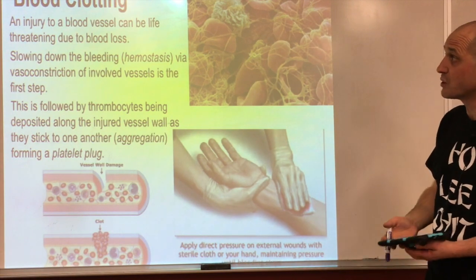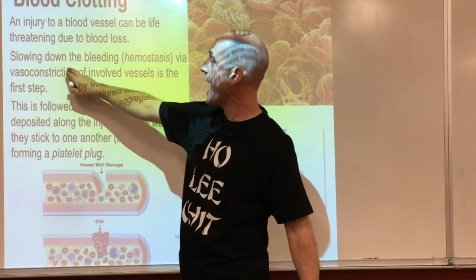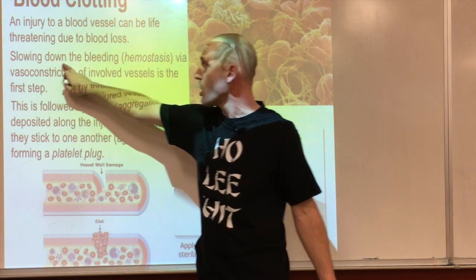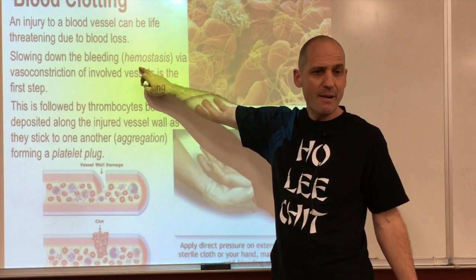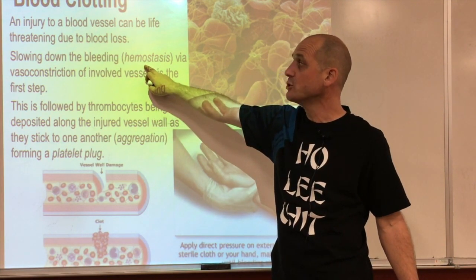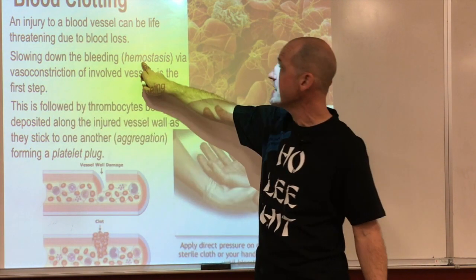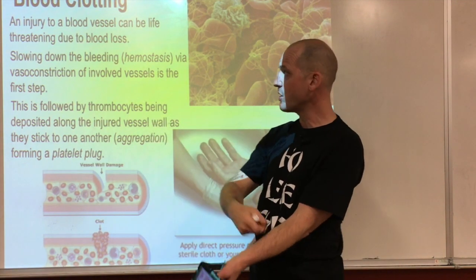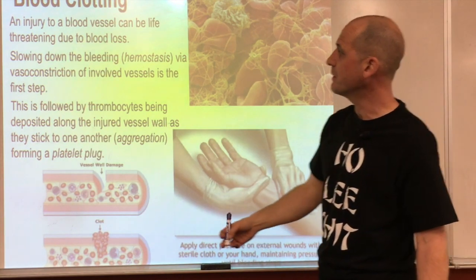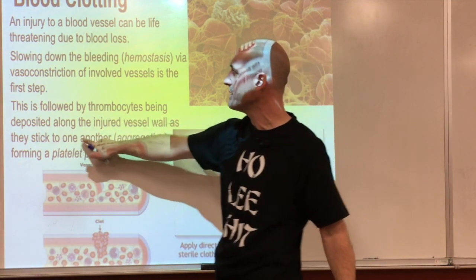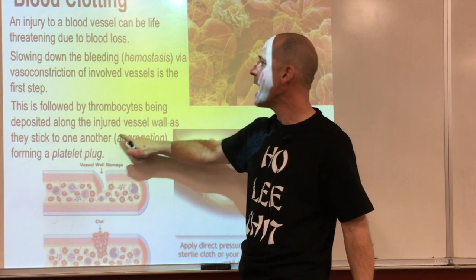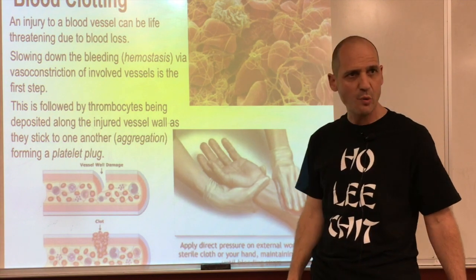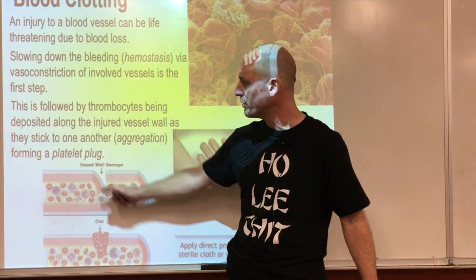When there is an injury to a vessel, we first slow down the bleeding by constricting the involved vessels - that's called hemostasis. This is followed by thrombocytes being deposited along the injured vessel wall; as they stick to one another - called aggregation - they form a platelet plug.